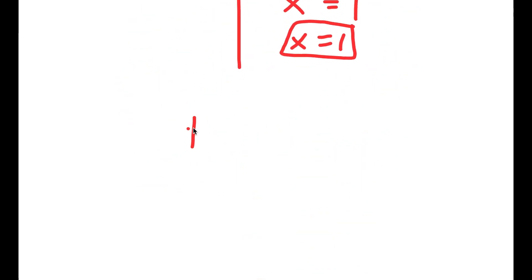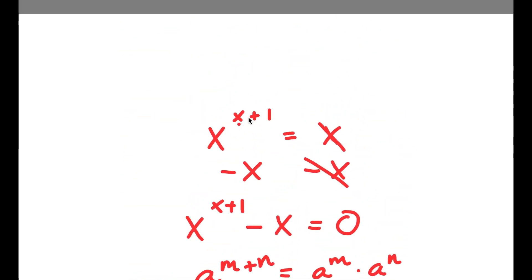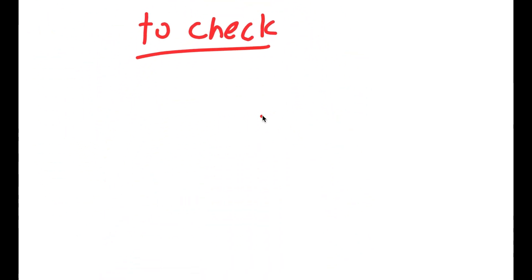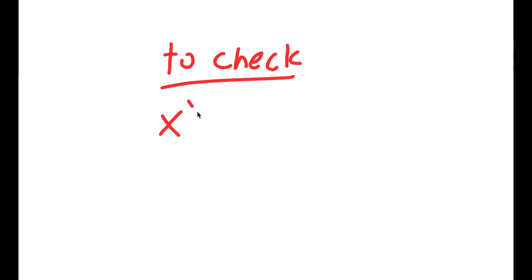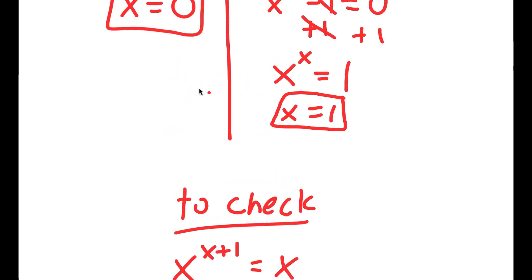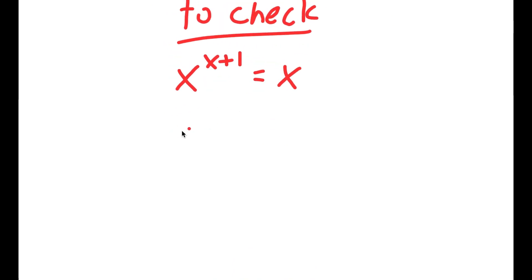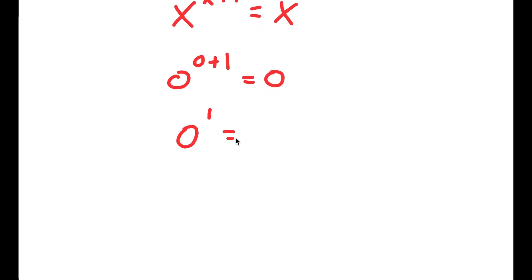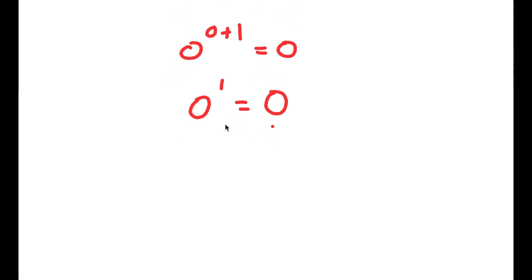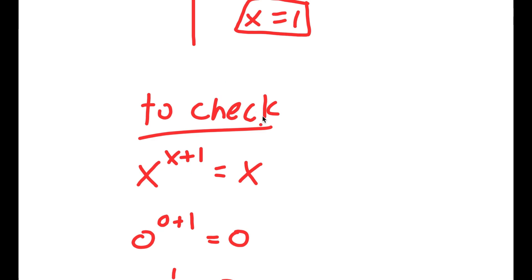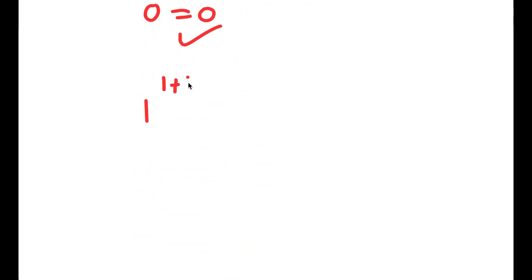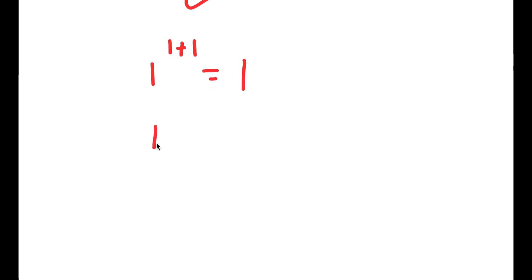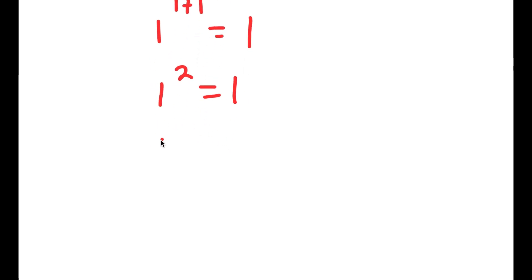To check: the original equation was x to the power of x plus 1 equals x. For x equals 0: 0 to the power of 0 plus 1 equals 0 to the power of 1, which equals 0. So 0 equals 0. ✓ For x equals 1: 1 to the power of 1 plus 1 equals 1 to the power of 2, which equals 1. So 1 equals 1. ✓